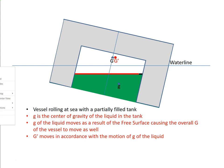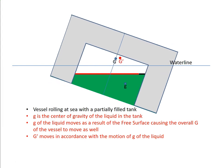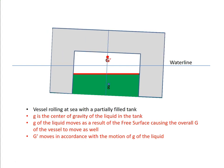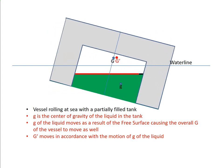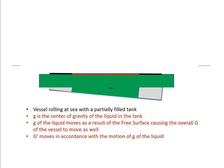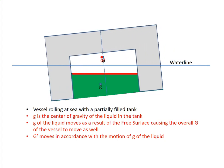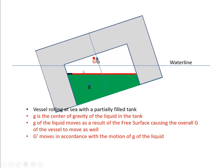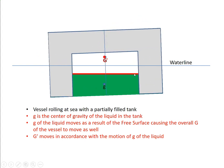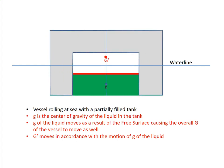That's where G would have been if this tank didn't have any free surface, and this is where it is now as a result. As the vessel inclines more, little g goes farther to starboard. You can see little g going to starboard and big G following it. Now the vessel's rolling back, little g is coming back towards the centerline and big G is following it. You might also note that the beam is actually increasing in the tank as the vessel rolls, at least under these conditions.